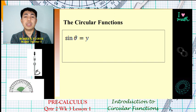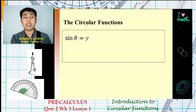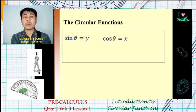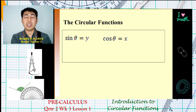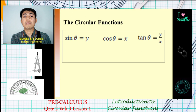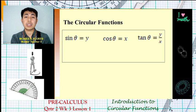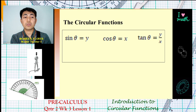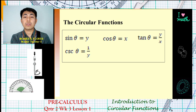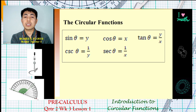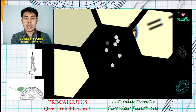The primary circular functions are: sine θ = y, cosine θ = x, and tangent θ = y/x. The secondary functions are their reciprocals: cosecant θ = 1/y (reciprocal of sine), secant θ = 1/x (reciprocal of cosine), and cotangent θ = x/y (reciprocal of tangent).